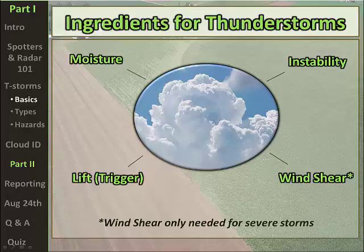Before severe weather can occur, we need a thunderstorm to form in the first place. We want to go over the four ingredients of thunderstorm formation. The first is moisture, and typically in this part of the country we increase our moisture through southerly flow from the Gulf of Mexico.